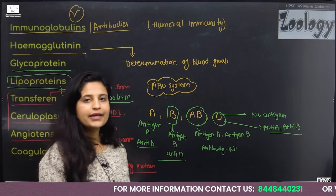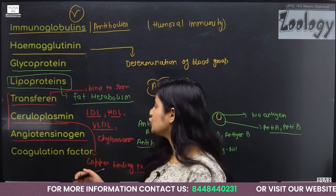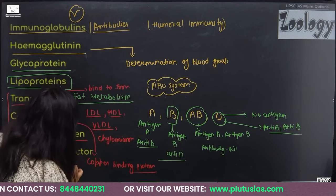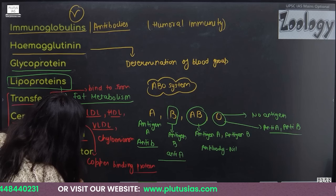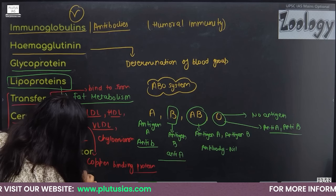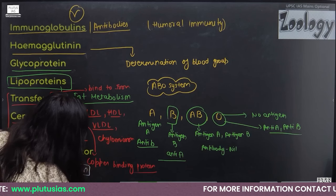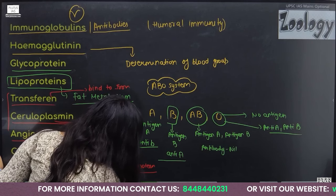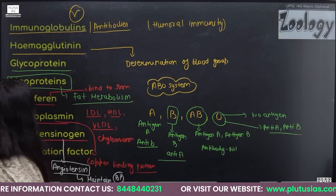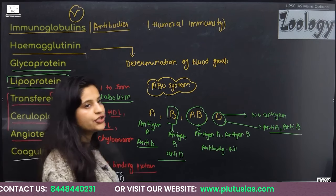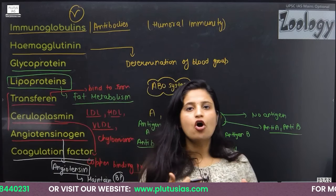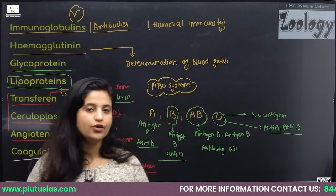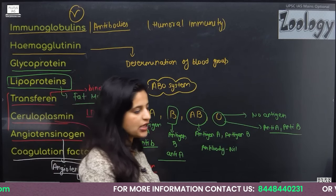Angiotensinogen, during the renin mechanism, is converted into angiotensin, which plays a very important role in maintaining blood pressure. Many coagulation factors are also formed by gamma globulin, though prothrombin and fibrinogen are separate from these.